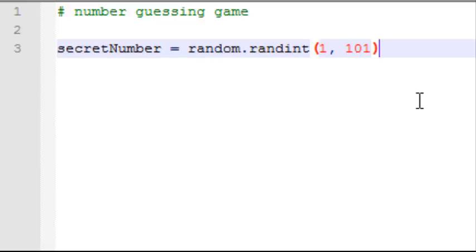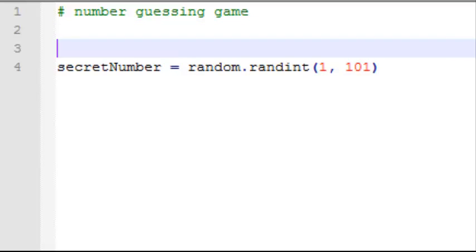Now the way the randint function works is that it creates a random number between 1 and the second number non-inclusive. So if we want to create a number up to 100, we need to put 101. And when we use the random number generator, we have to add an import statement to the beginning of our program. So we'll import random.